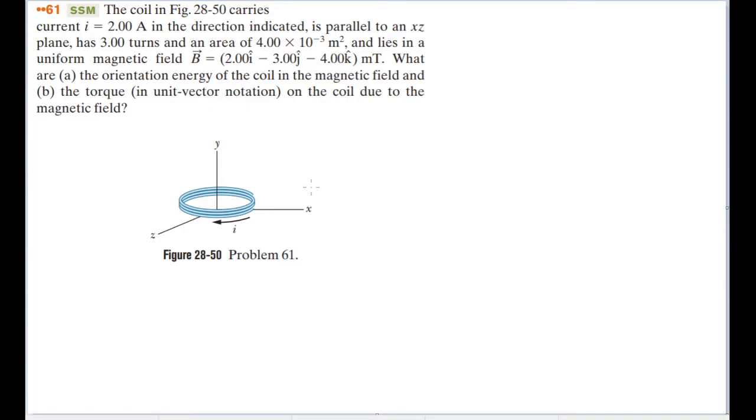For part A, we'll have to know a few formulas that are given to us in the textbook. Part A asks about the orientation energy of the coil, or rather the magnetic energy, because due to the magnetic field. The magnetic energy, according to our formula in the textbook, or U, is equal to the negative dot product between the magnetic dipole moment and the magnetic field.